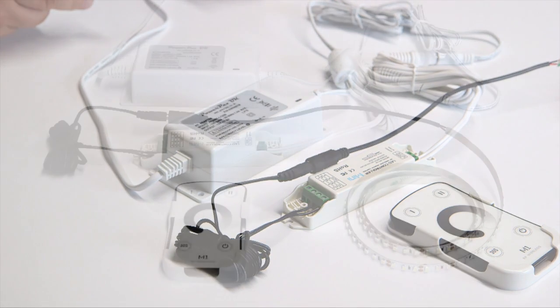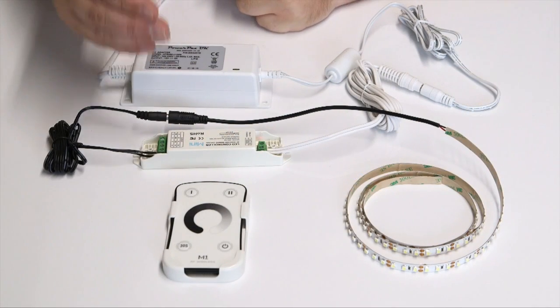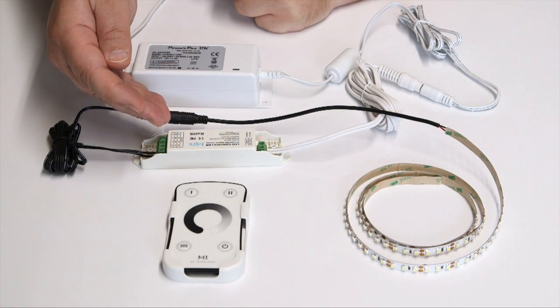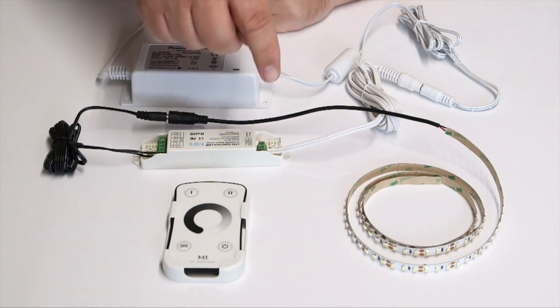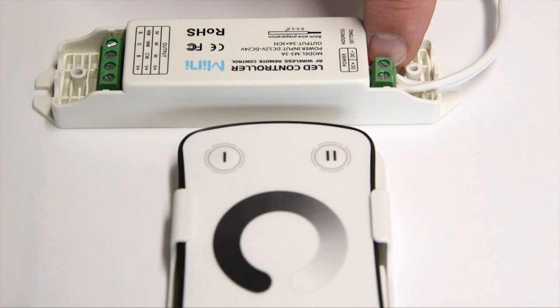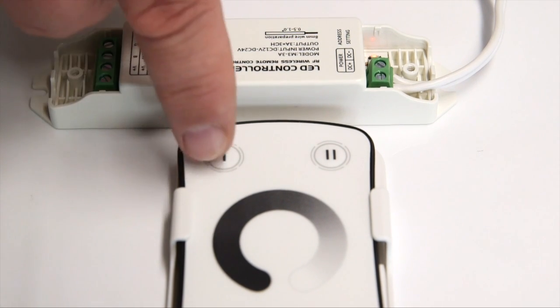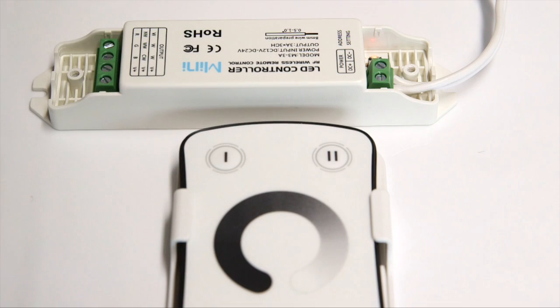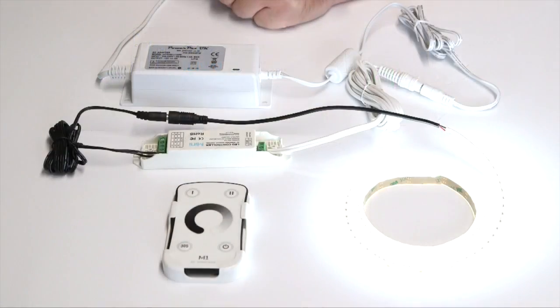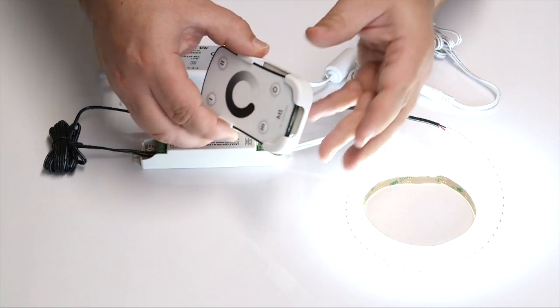The receiver and handheld remote should already be paired together, but just in case we will show you how to pair the two parts here. Press the learning ID button on the receiver as shown. You will see when you do this the flashing LED remains on. Then, press any key on the remote to pair the two parts. The LED will now flash rapidly to confirm pairing has been successful. You are now ready to use the little remote to control your LED strip.